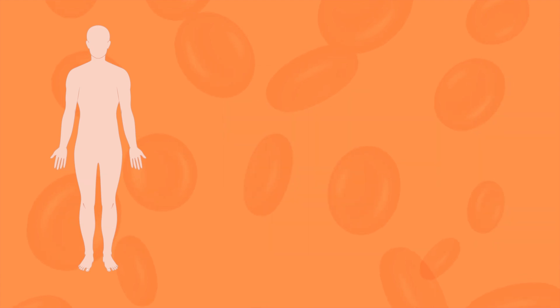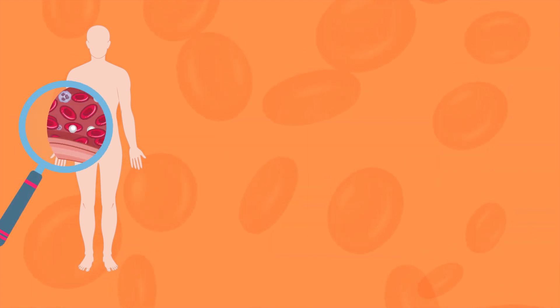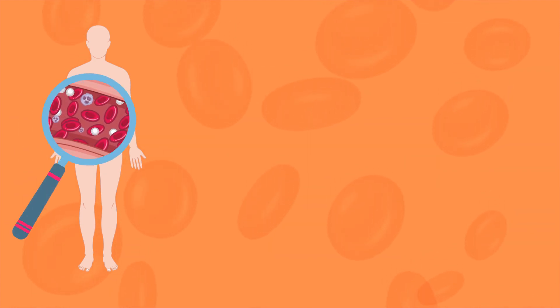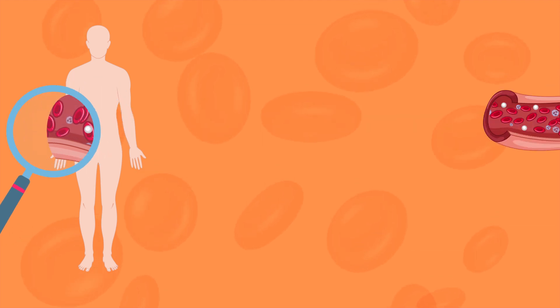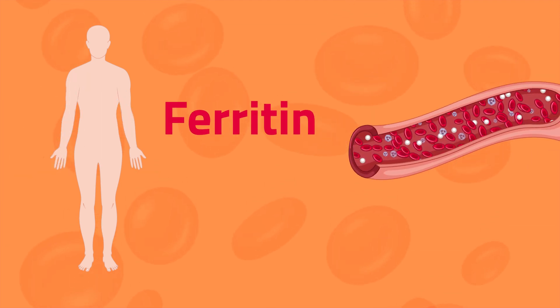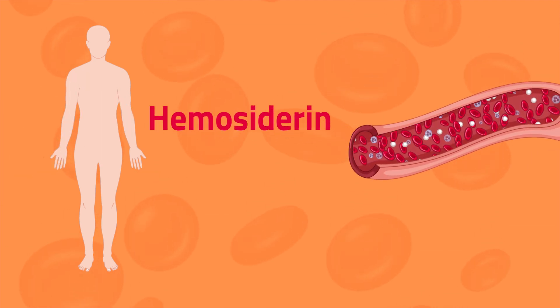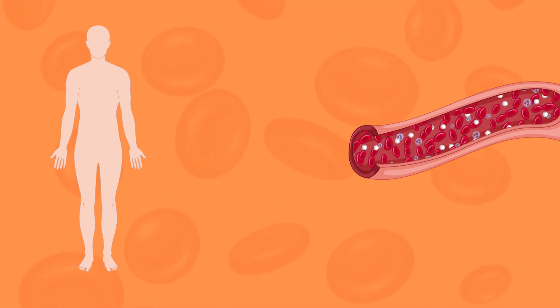In healthy people, most of the iron absorbed by the body is incorporated into the hemoglobin of red blood cells. Most of the remaining is stored as ferritin or as hemosiderin or other substances.